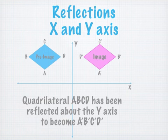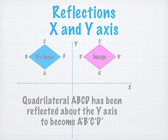Okay, it gets a little harder here. We have reflections with the X and the Y axis, so you're going to need to look at the grid. We have two quadrilaterals: the pre-image in blue, that's the before, and the image in pink, that's the after. They are labeled A, B, C, and D, and A prime, B prime, C prime, and D prime. The pre-image has been reflected about the Y axis — flipped over the Y axis. A corresponds to A prime, B to B prime, C to C prime, and D to D prime.